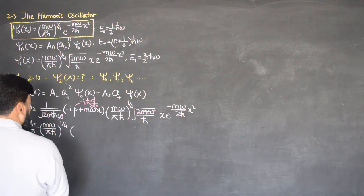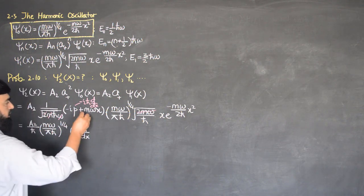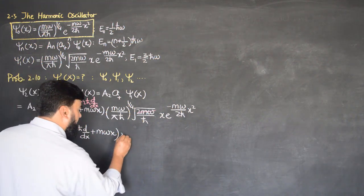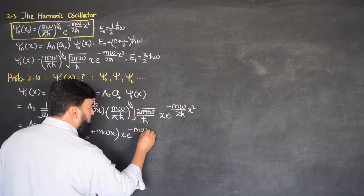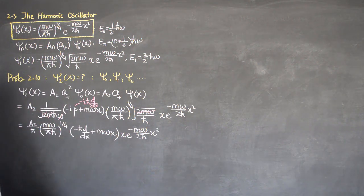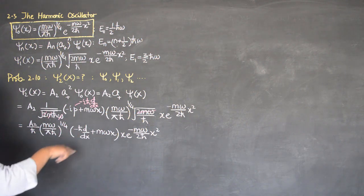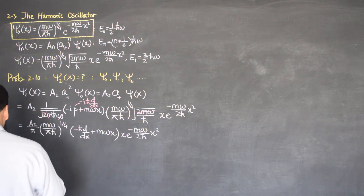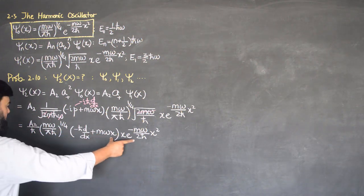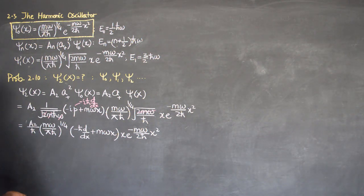Substituting p = −iℏ d/dx, it becomes +n times (−ℏ d/dx · x − ℏ d/dx + mωx) applied to x · e^(−mω/2ℏ · x²). I will need to apply the derivative on this expression. As usual practice, I will compute the result — applying the operator and calculating the normalization constant A₂ as well — so you can do this as an assignment.